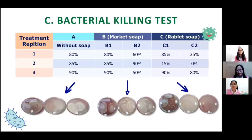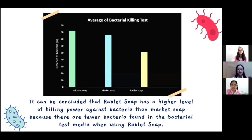Then, the analysis of the bacterial killing test. This is a table of bacterial killing test results data. We use 3 petri dishes for this test, and we conclude the results in this graph. It can be concluded that rabbet soap has a higher level of killing power against bacteria than market soap, because there are fewer bacteria found in the bacterial test media when using rabbet soap.